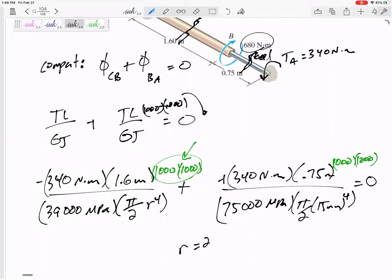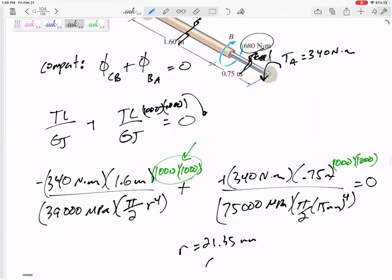All right. Then we've got R is equal to 21.35 millimeters. Question technically asked for the diameter, 42.7 millimeters. So, if that had a diameter of 42.7, then it would make the torques 340 on each side. All right. We made it. That's all I've got.